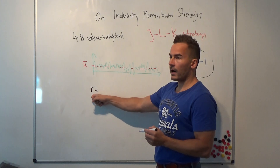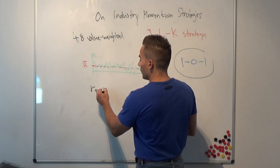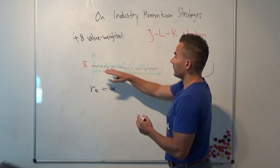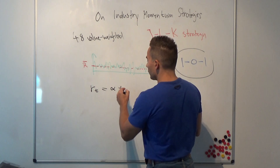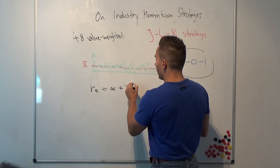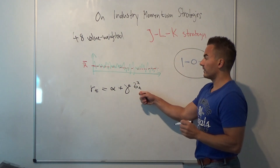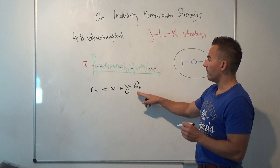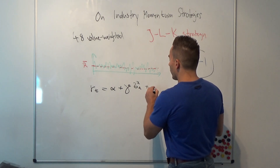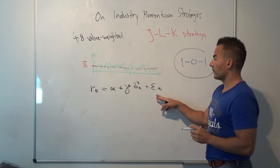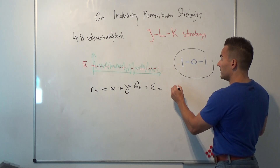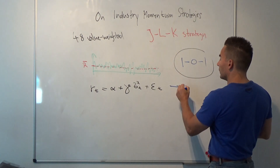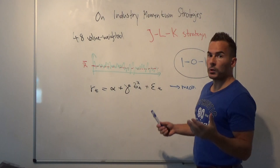Let r_t denote the return of the strategy. The mean equation is: r_t equals an intercept term alpha, plus gamma times sigma-squared_t — the conditional variance at time t — plus an error term epsilon_t. This is the mean equation.